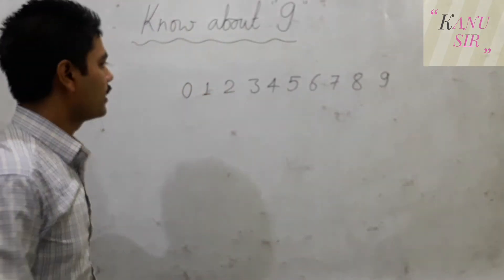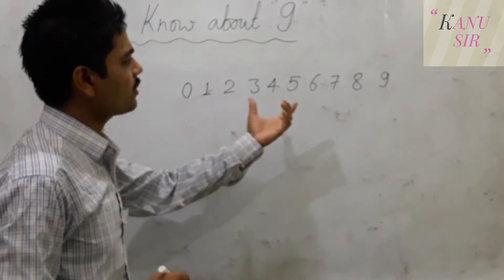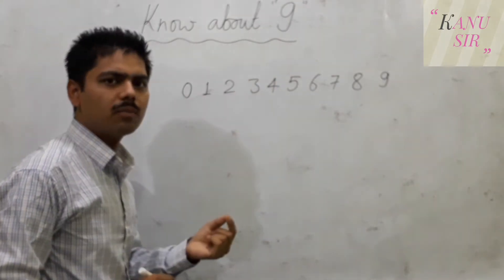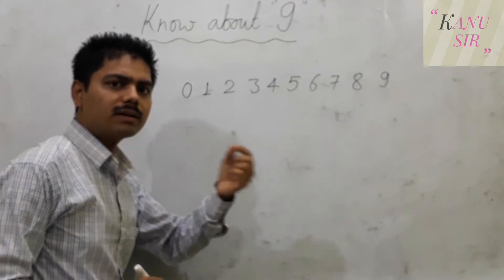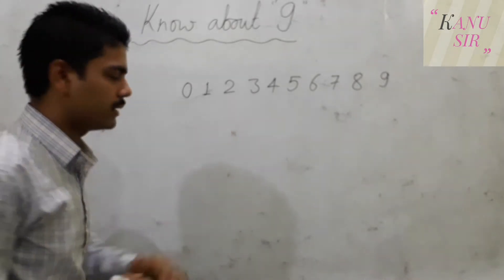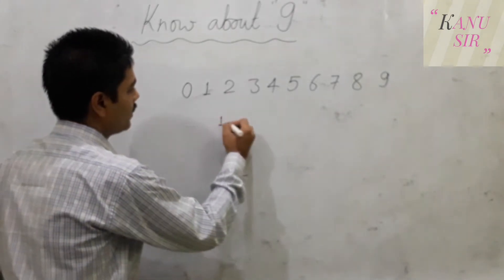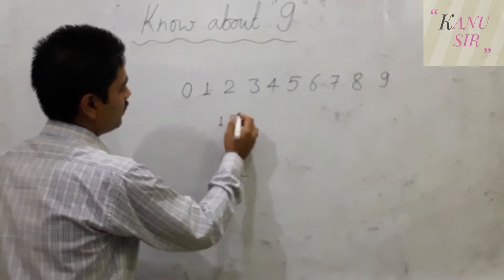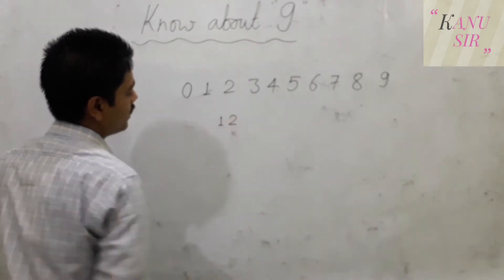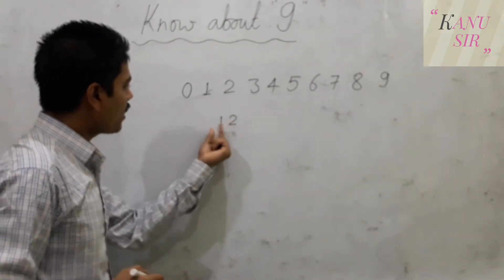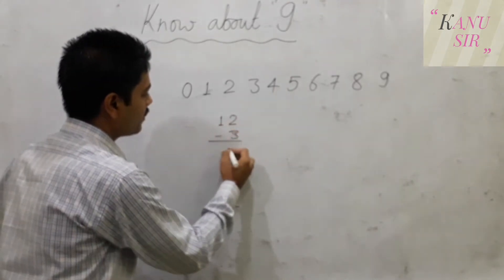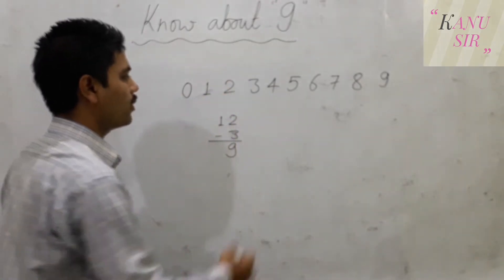There is a very special point about 9. If you add any 2 digits number, if you add the digits of a 2 digits number you will get 9 around it. How would this happen? Like we will write 12, then 1 plus 2 is 3, so we will subtract 3 from 12. 12 minus 3, you will get 9.